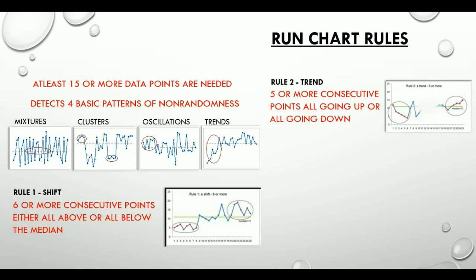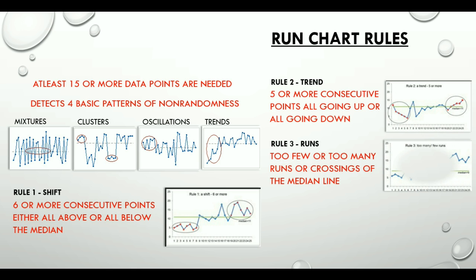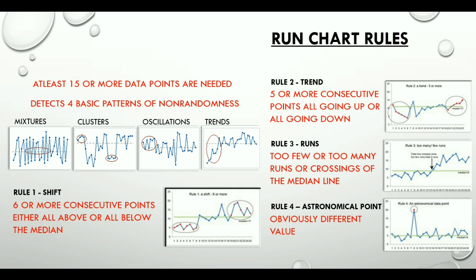Rule number three is runs: too few or too many runs or crossings of the median line. And rule number four is an astronomical point, which is obviously a different value, a value which is very far from us. So this was about run charts that I wanted to share with you.